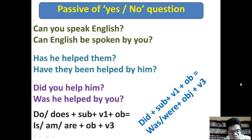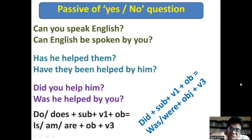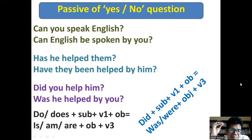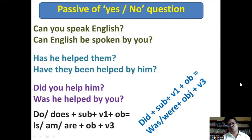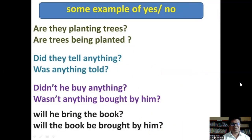For yes/no questions with do/does, the do or does is added first, then subject, then verb and object. Note: when 'did' is used to form a question, the main verb remains in present form because the past tense transformation goes through the 'do' verb. More examples: 'Are they planting trees?' → 'Are trees being planted?' 'Did they tell anything?' → 'Was anything told?' Students, take screenshots of these sentences and practice making more sentences like this.